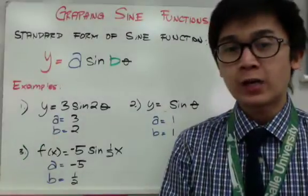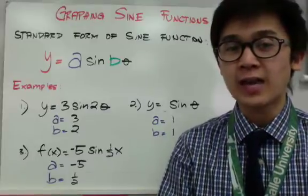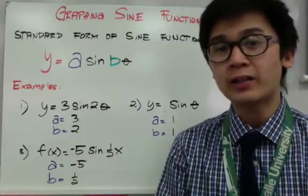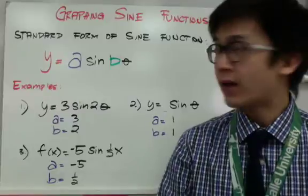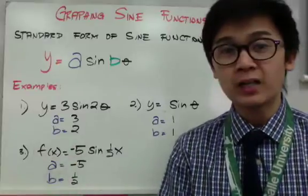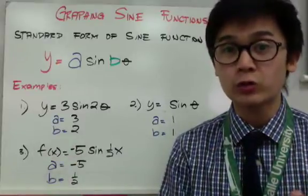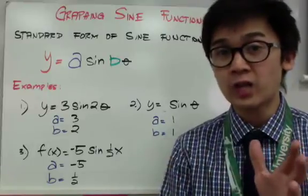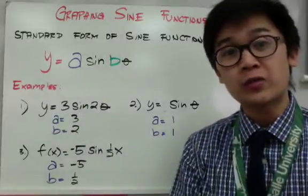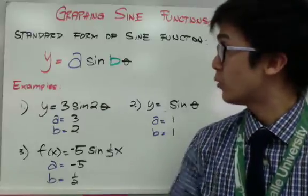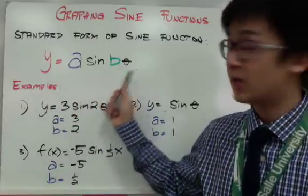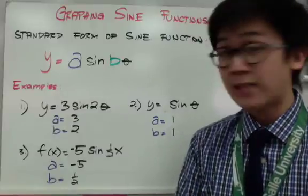Graphing sine and cosine functions — these are periodic functions, meaning they repeat over and over again. Today we're going to use one period of a given sine and cosine function. Before we can start graphing, you should know the standard form of a sine function: y equals a sine b theta, where a and b are both real numbers.